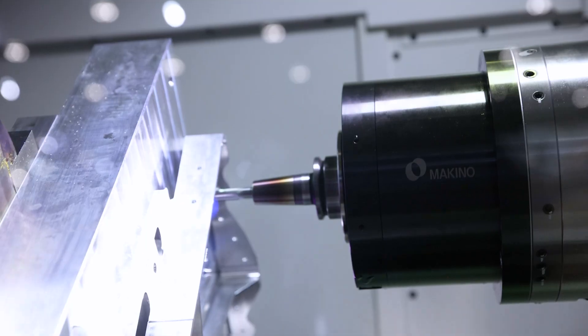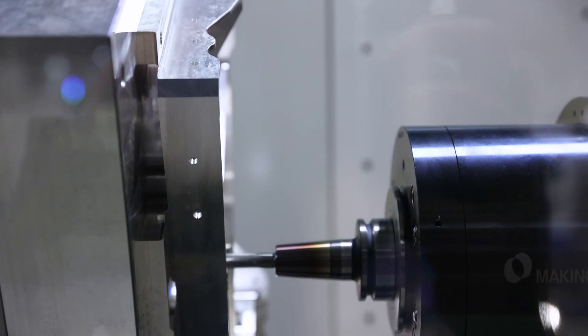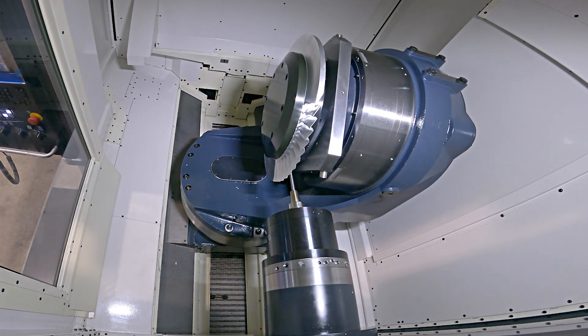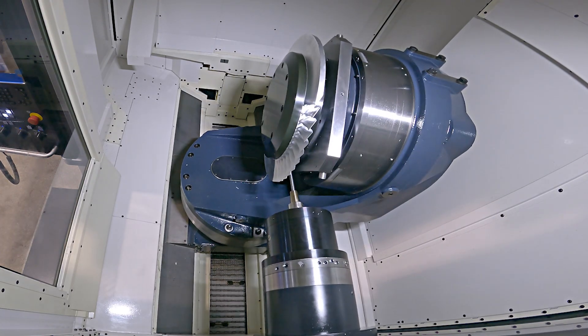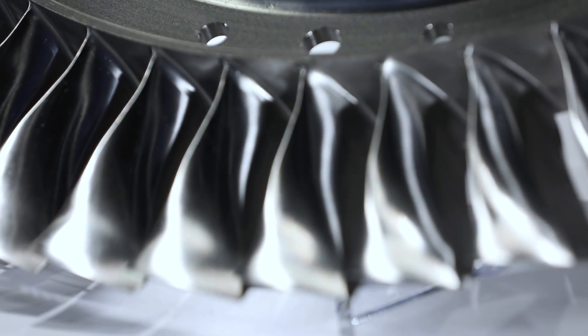On the machine right now we're cutting a track rib demo. It's one of the aerospace components that is a good fit for this machine. On pallet 1 we're actually cutting a blist demo. We have a finished display part that was cut in Japan. That was a total of 72 hour cycle time.